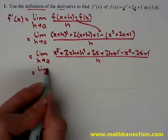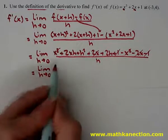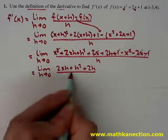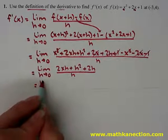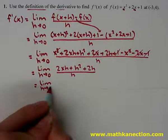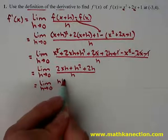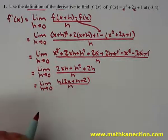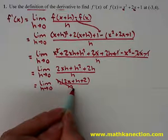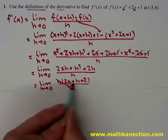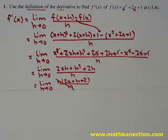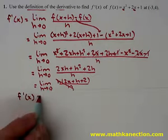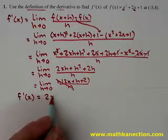So we have the limit as h approaches 0 of 2xh plus h squared plus 2h, all over h. Factor out the h's in common from the numerator, giving the limit as h approaches 0 of h times the quantity 2x plus h plus 2, all over h. Reduce the h's, replace 0 in for h, and f prime of x equals 2x plus 2.